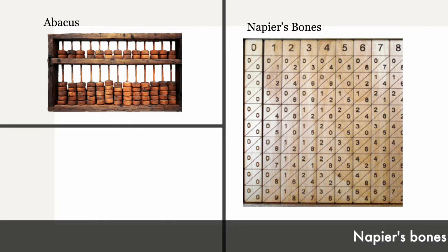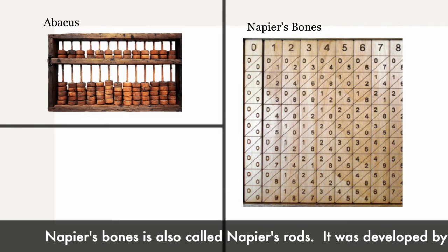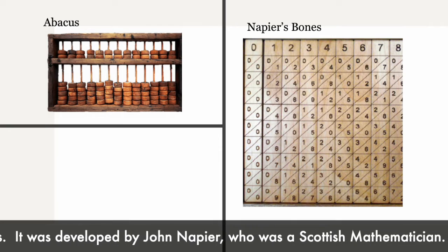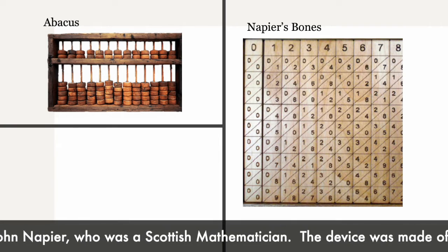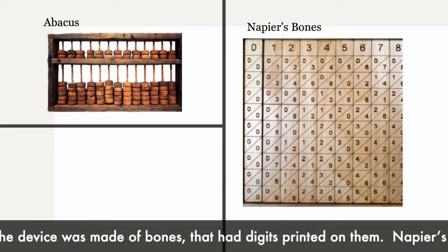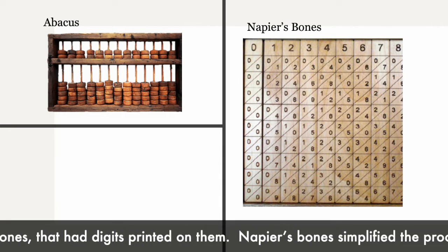Napier's bones is also called Napier's rods. It was developed by John Napier, who was a Scottish mathematician. The device was made of bones that had digits printed on them. Napier's bones simplified the process of multiplying complex numbers.